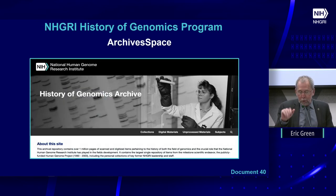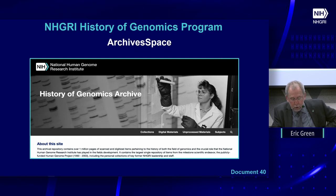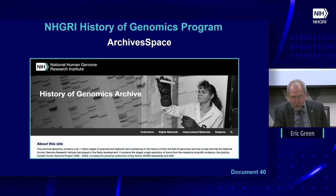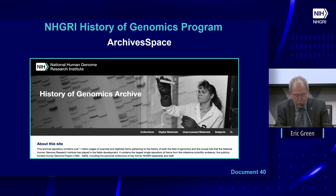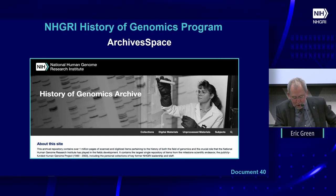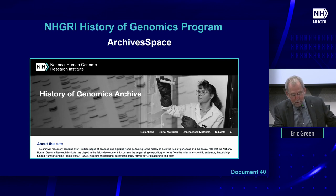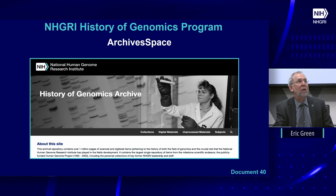The NHGRI History of Genomics program will soon launch a new website powered by ArchivesSpace — an open source application used by institutions including the National Library of Medicine — providing public access to vast amounts of significant historical materials preserved by the Institute. The first two collections featured are the Francis Collins Collection and the Elka Jordan Collection, comprising over 125 boxes of fully digitized paper documents from their tenure at NHGRI spanning 1990 to 2006, with extensive metadata enabling full search capability.